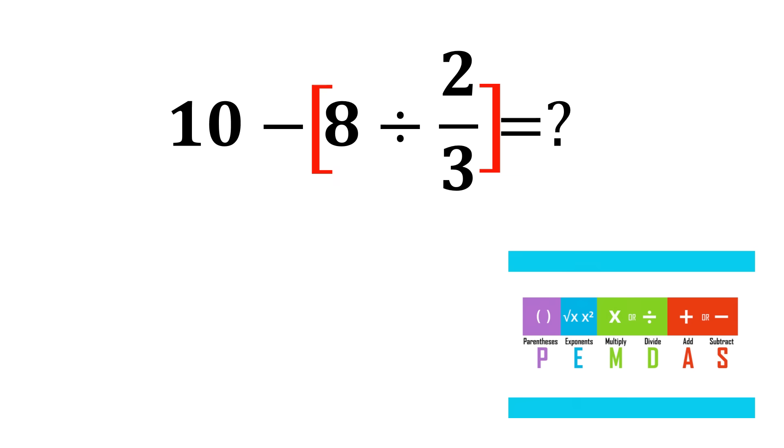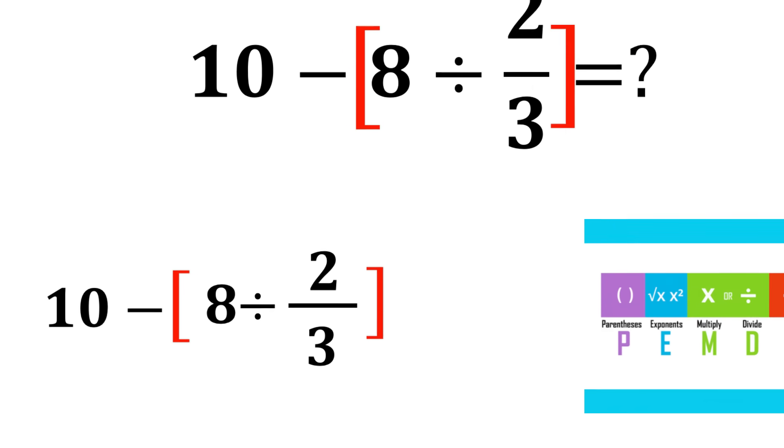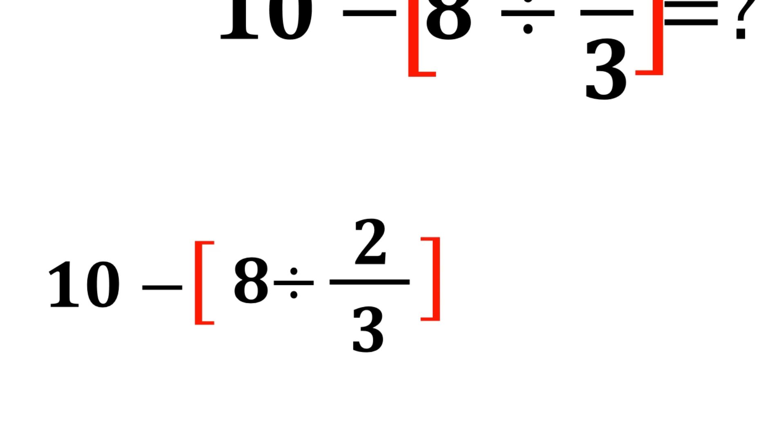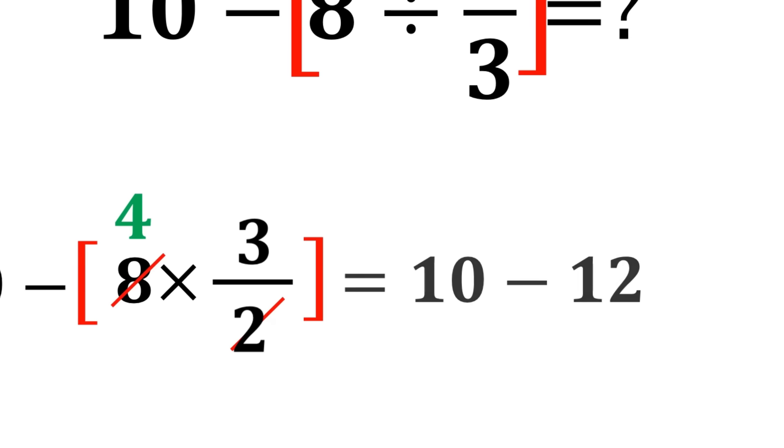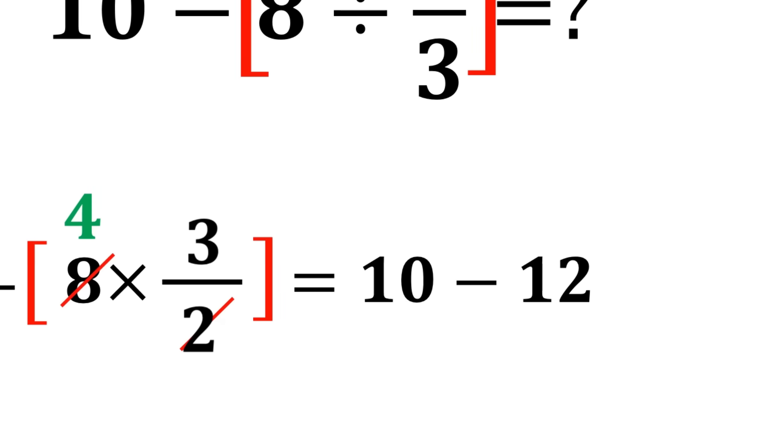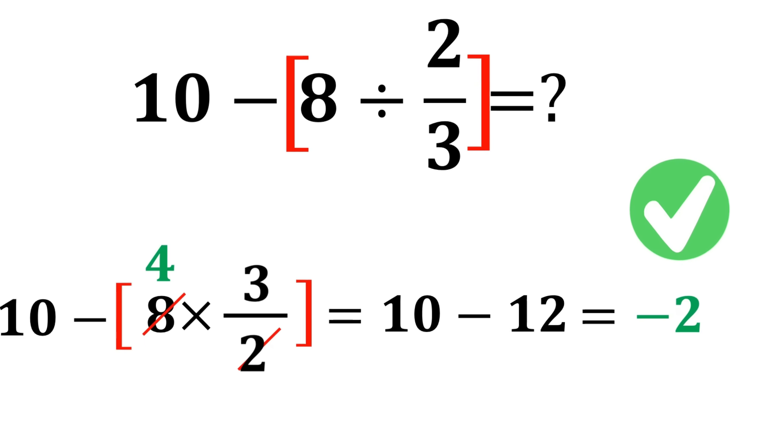We look at the section 8 divided by 2/3. Here we use the KFC rule: we keep the 8, we flip 2/3 to 3/2, and we change division to multiplication. Now we simplify the multiplication: 8 divided by 2 equals 4, and 4 multiplied by 3 equals 12. So the original expression becomes 10 minus 12 equals negative 2, and that is the correct answer.